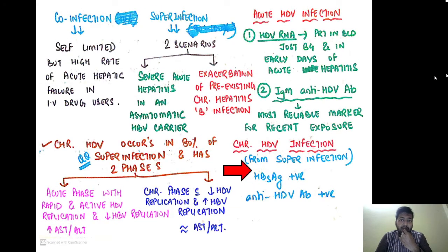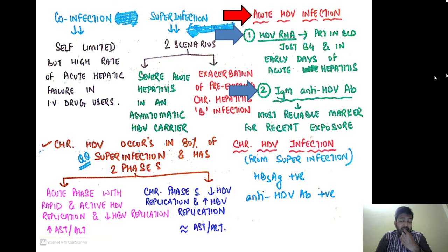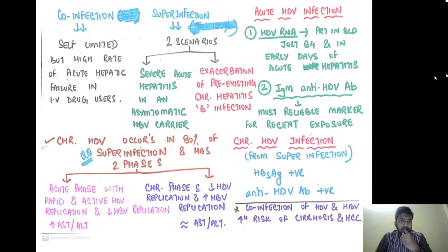For serology in acute HDV infection, HDV RNA is present in the blood just before and in the early days of acute hepatitis. The more reliable marker for acute HDV infection is IgM anti-HDV antibody. In chronic hepatitis D virus infection from super-infection, HBsAg antigen will be positive along with anti-HDV antibody.